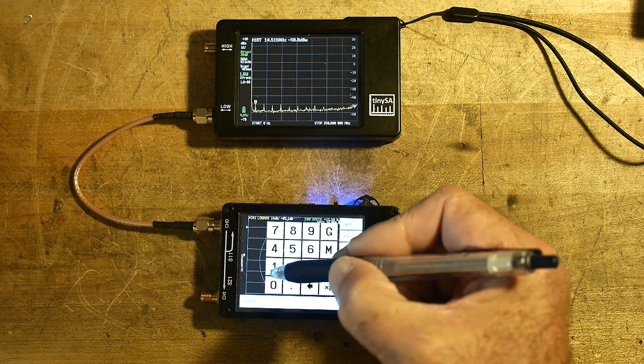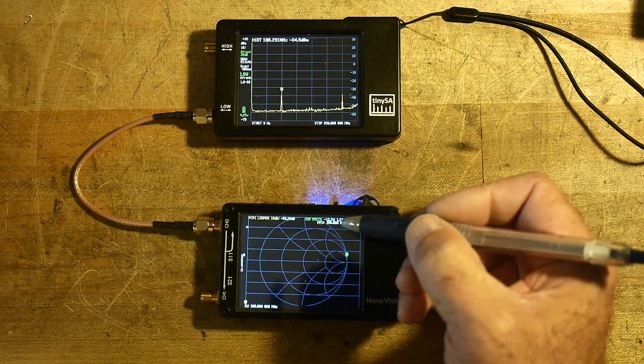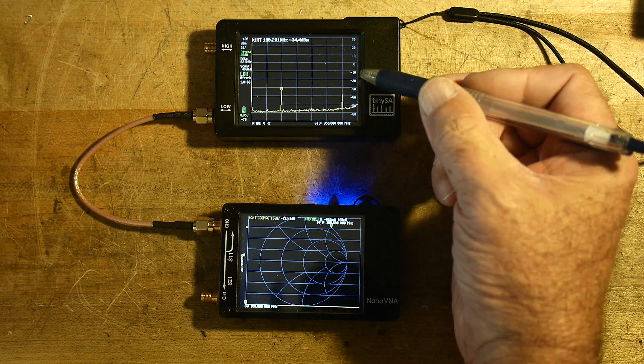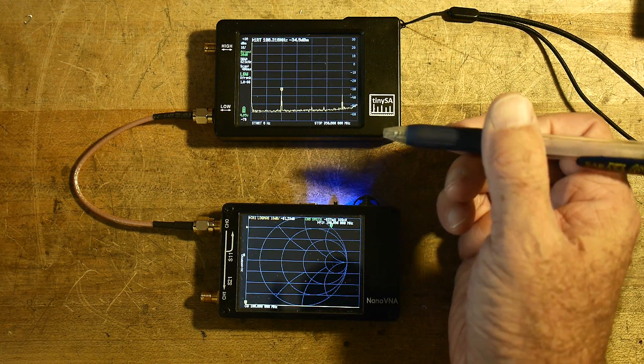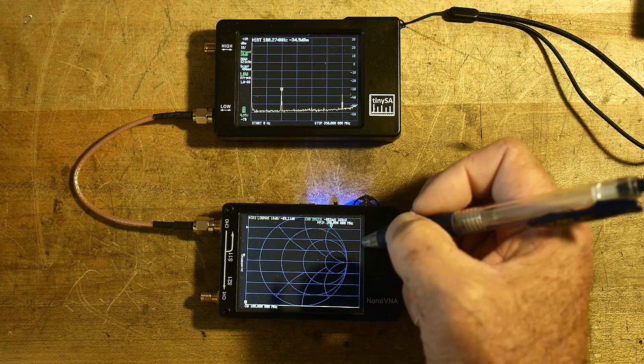And then we've got a CW frequency of 100 megahertz. We're up here around minus 34. Yeah, it's much different. Interesting.